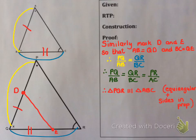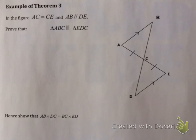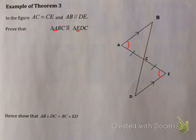Whenever you use Theorem 3, what it says is: if you can prove angle-angle-angle, the triangles are similar — which is what we've been doing since Grade 9. The only difference is now we've proved why. Let's look at a Grade 9 style question. It says: in the figure, AC equals CE and AB is parallel to DE. Prove that triangle ABC is similar to triangle EDC. Looking at the names ABC and EDC tells me A pairs with E, B pairs with D, and C pairs with C.